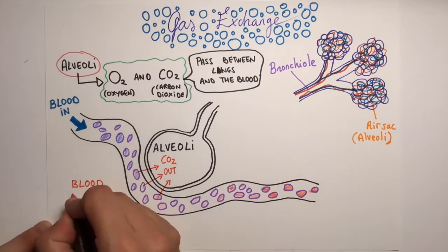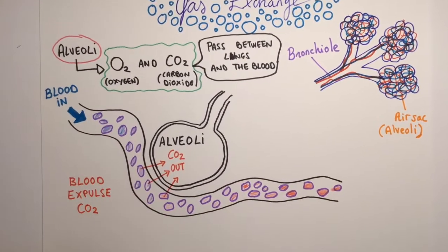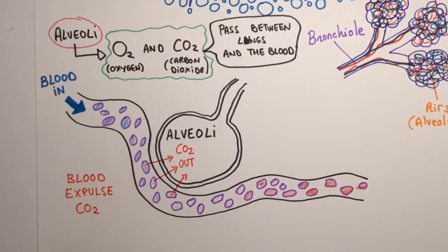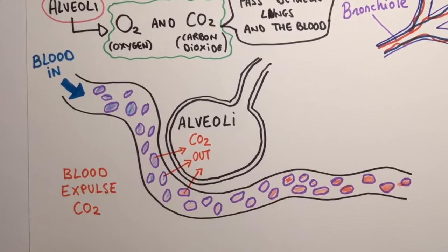The carbon dioxide produced by all the body cells travels through the blood and passes into the air sacs. The air sacs expel the carbon dioxide when we exhale.